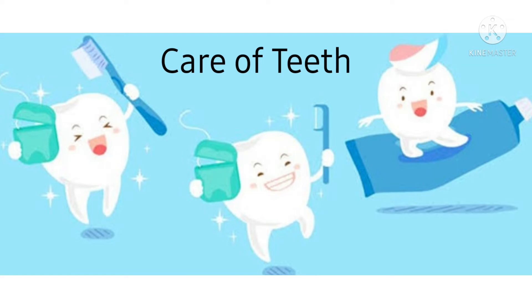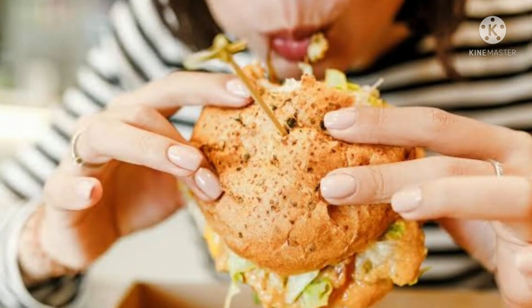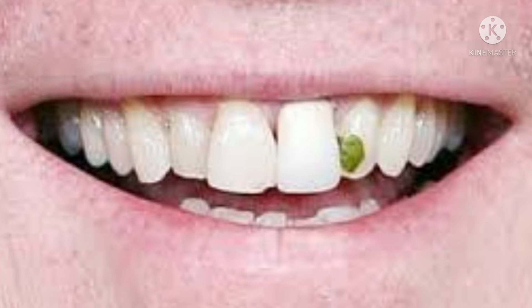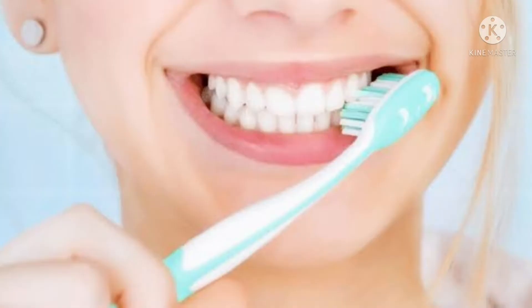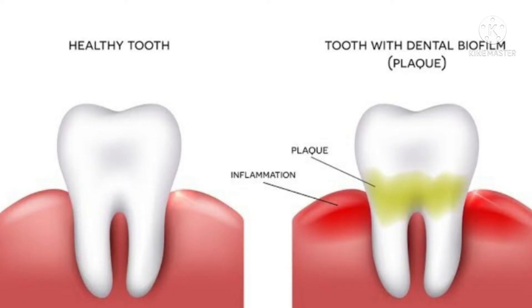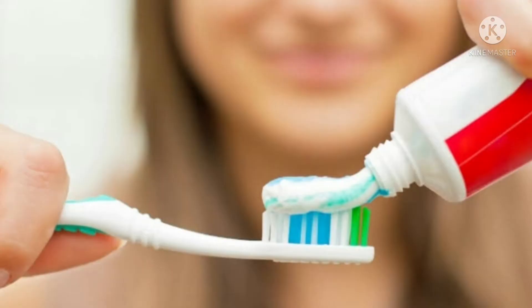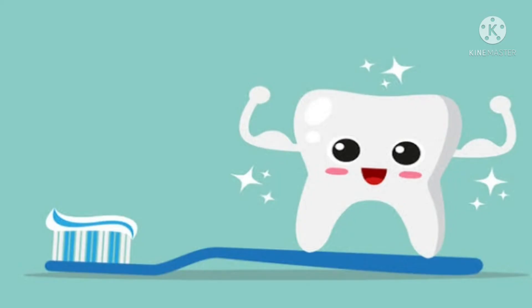Proper care of teeth is very important. When we eat, tiny bits of food get stuck in spaces between our teeth. We need to clean them out; otherwise germs can grow there and form a sticky yellow layer called plaque. Proper brushing with a toothbrush, toothpaste, and water can prevent plaque formation.